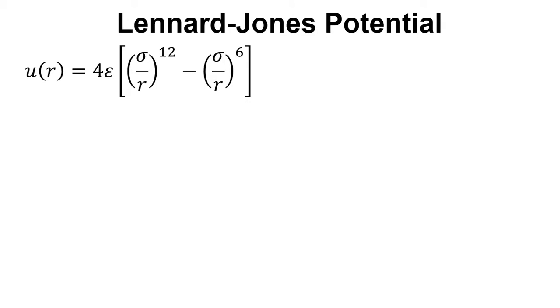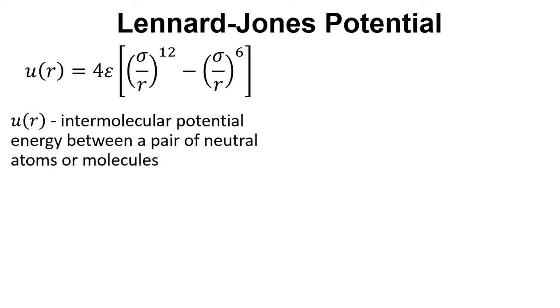In terms of having an equation to describe this attraction and repulsion, one of the very popular approaches is to use the Lennard-Jones potential. This has been proven to be a very effective equation to describe this, and it gets used in a lot of statistical modelling of chemical systems. So here's the equation.